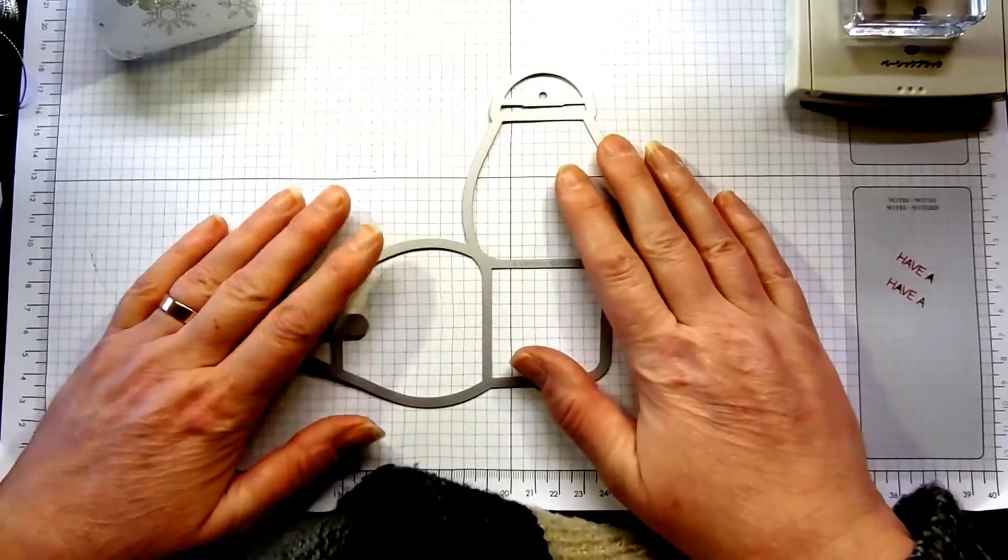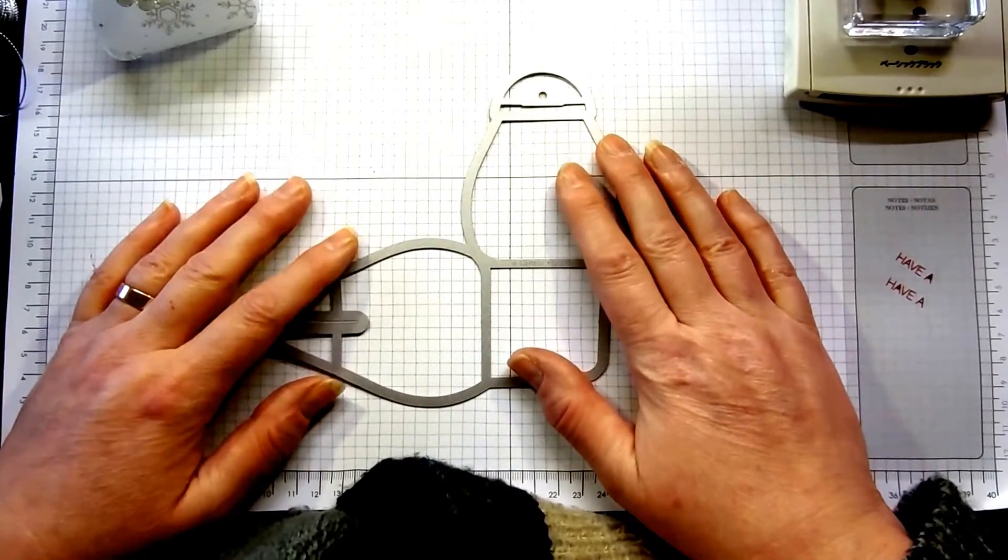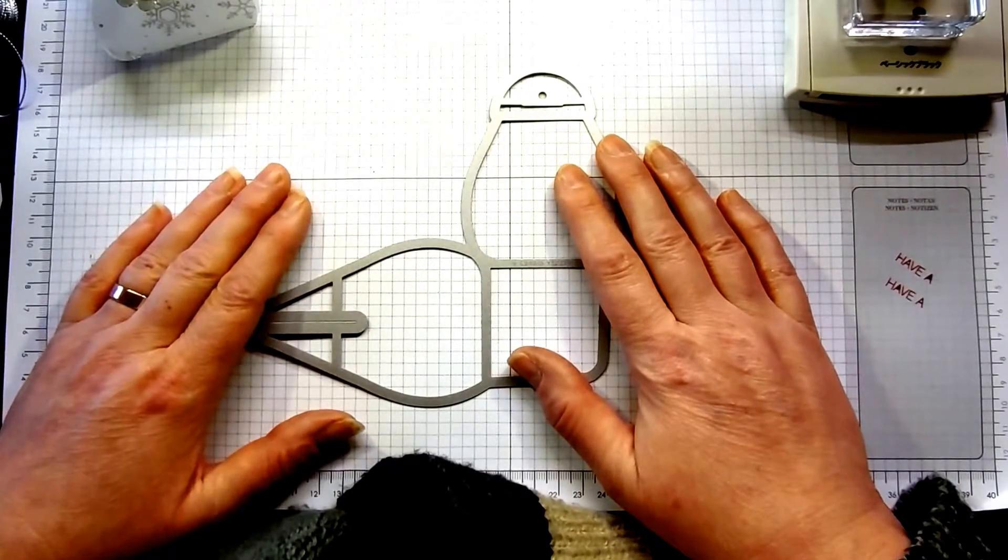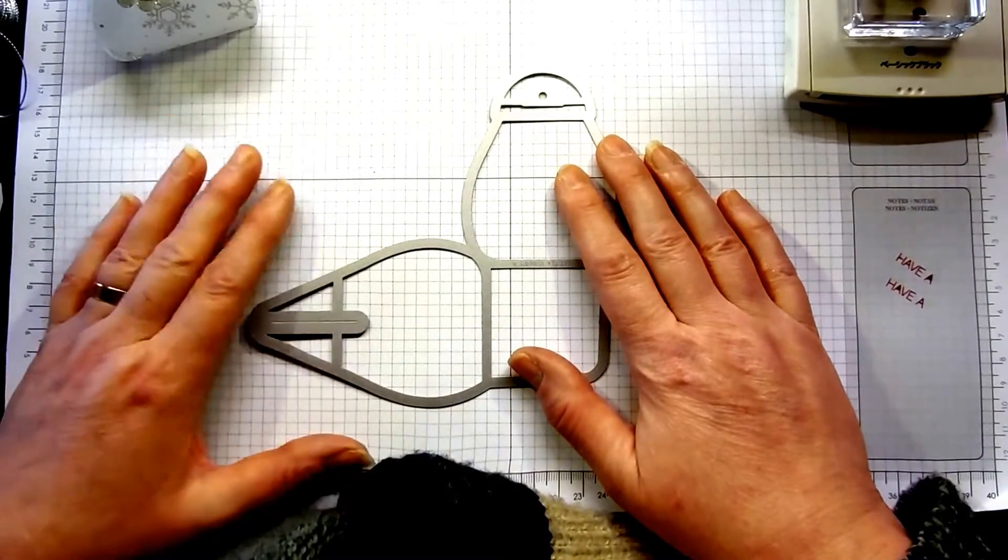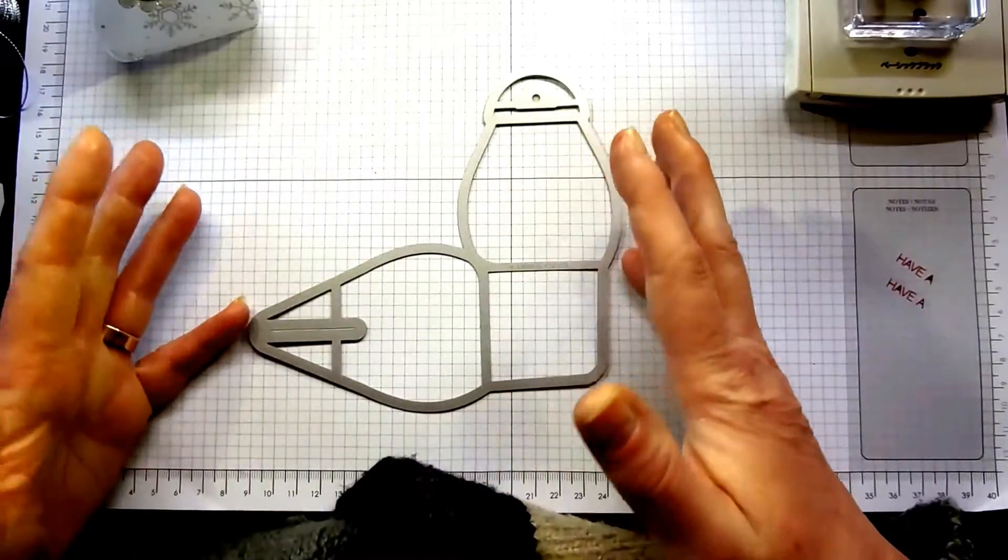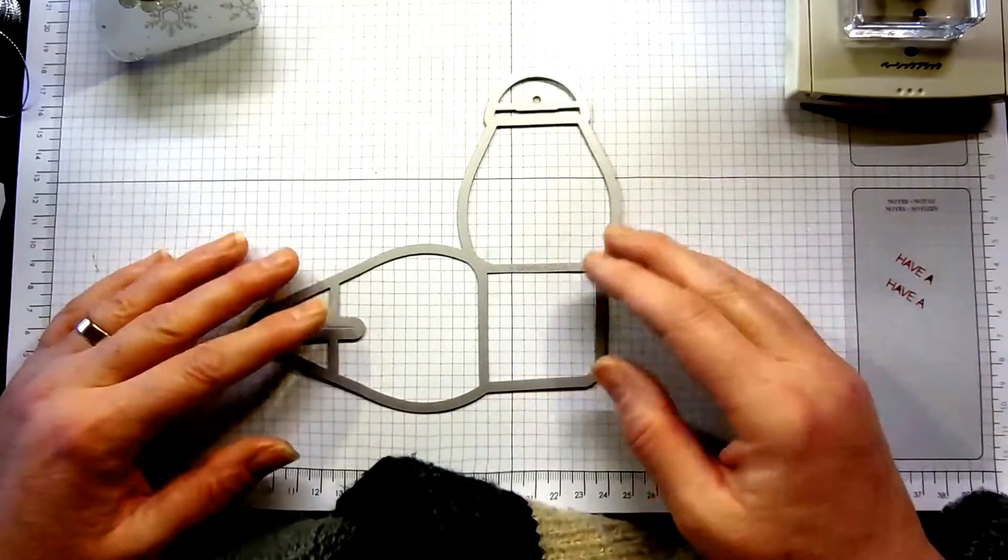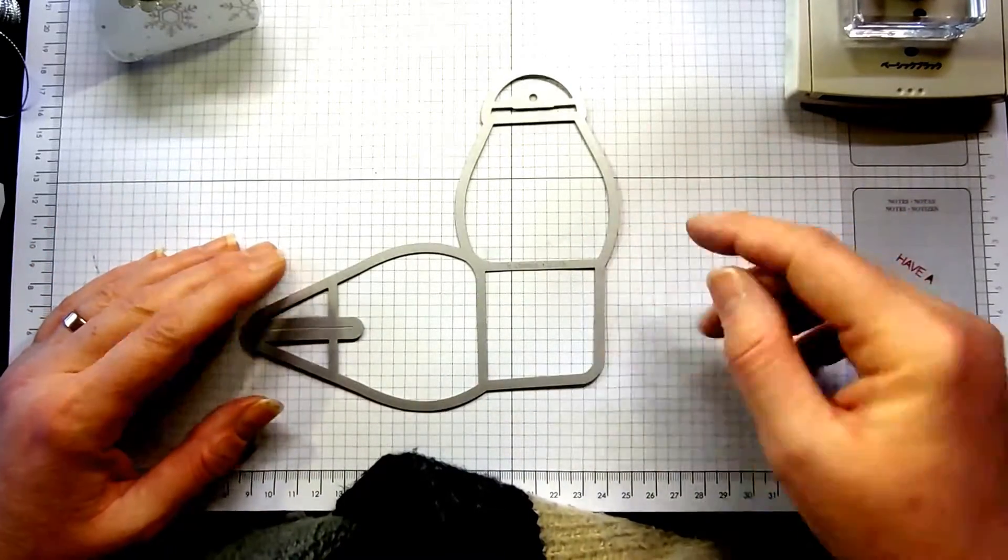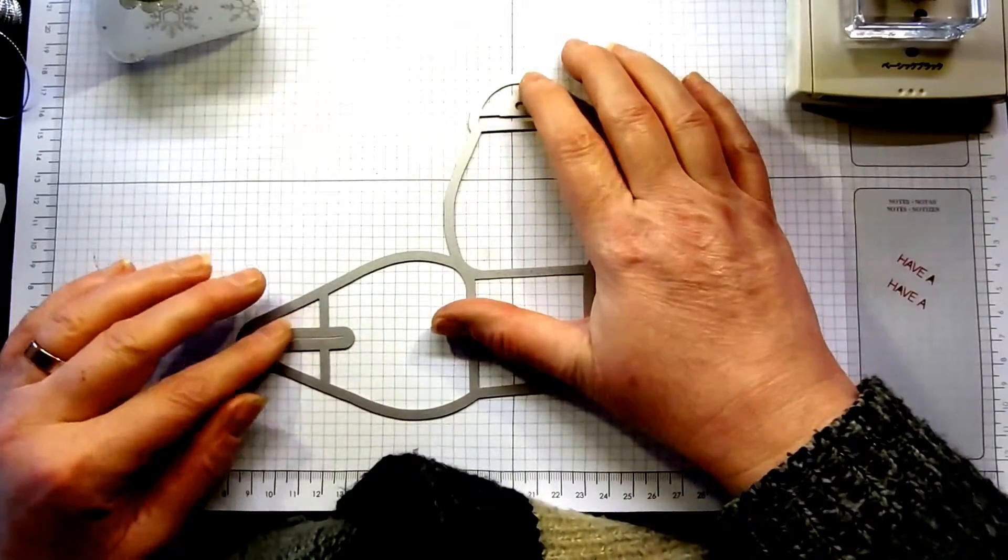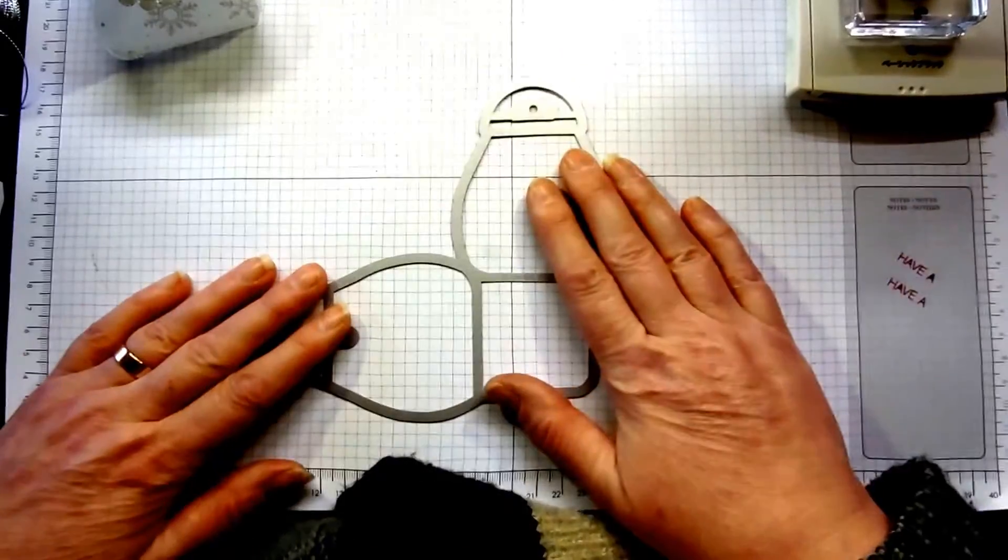Preferably with the magnetic platform. If you don't have a magnetic platform, you can use your multi-purpose platform on tab two with none of the flaps open. Run it through your Big Shot in the normal way. You might need some Post-it notes or masking tape on the die and the cardstock just to hold it in place because it is a bit of an odd shape.